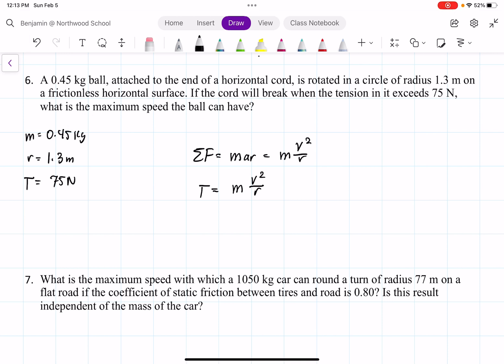Multiply by r, divide by m, and then take the square root. We can find that v equals the square root of r times T divided by m.